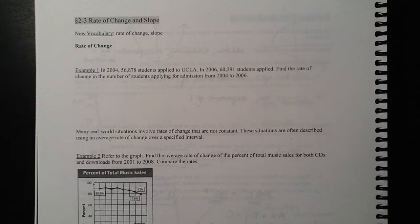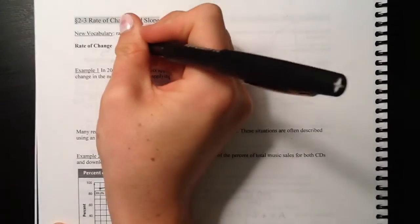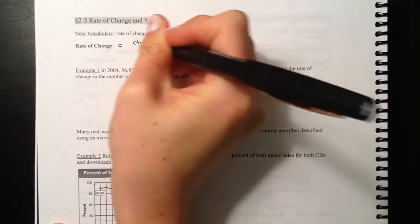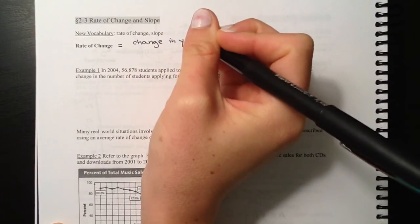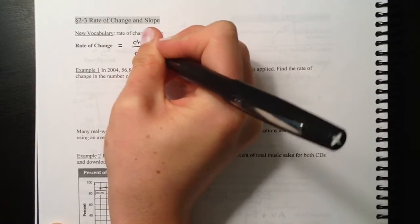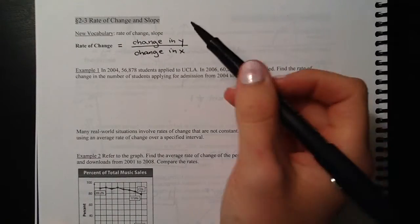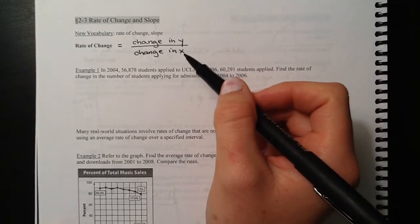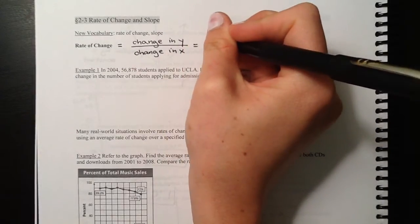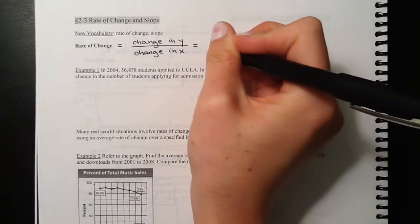We're going to talk about rate of change, which is defined as a ratio comparing how one thing changes compared to how another thing changes. We think of it as change in y, and y is what we consider to be the dependent variable, over change in x, and x is the independent variable. So rate of change is basically how our dependent variable is changing as our independent variable changes. In shorter form, we can write this little triangle, which is a Greek symbol for delta, which we use for change. So change in y over change in x.